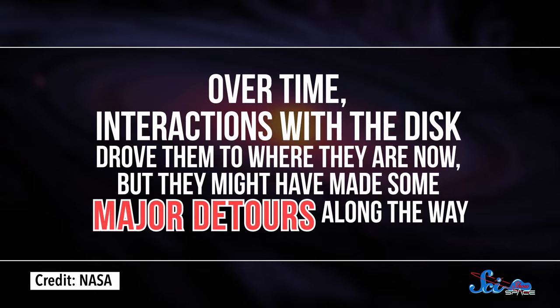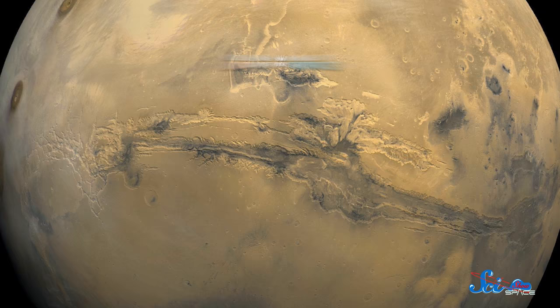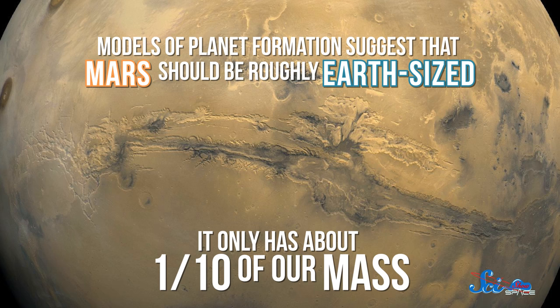Jupiter, for example, might have spent some time in what today we call the inner solar system. If it wandered close to the orbit of Mars as both planets were forming, it could have dramatically reduced the amount of material left to make the red planet. This would help explain why many models of planet formation suggest that Mars should be roughly Earth-sized, when really it only has about one-tenth of our mass.